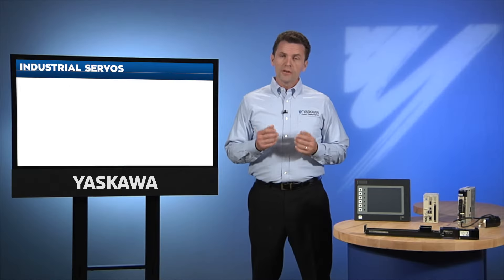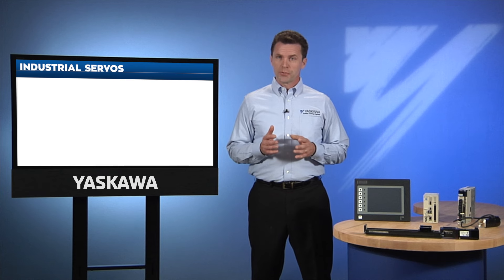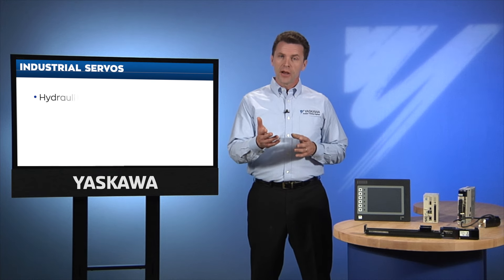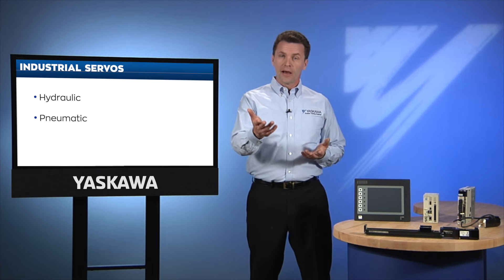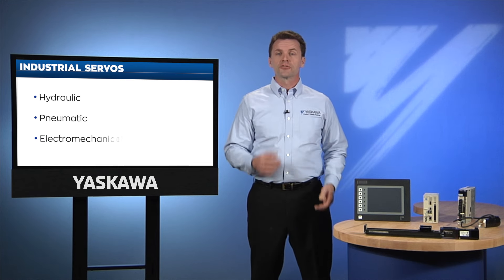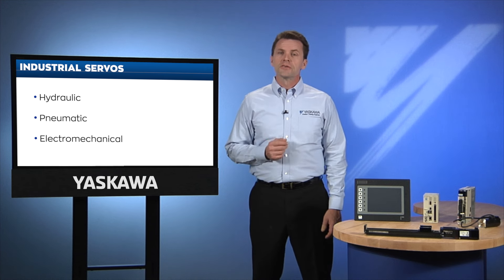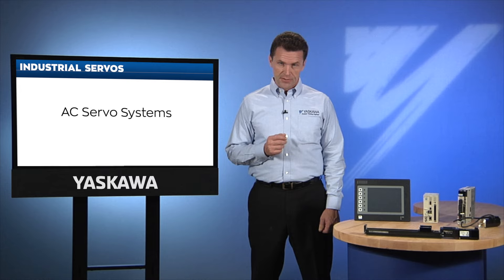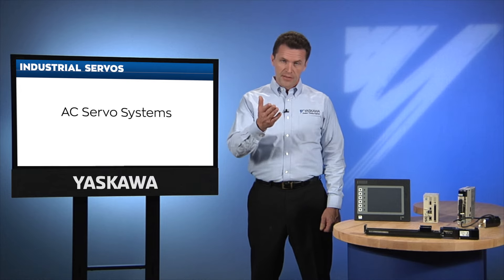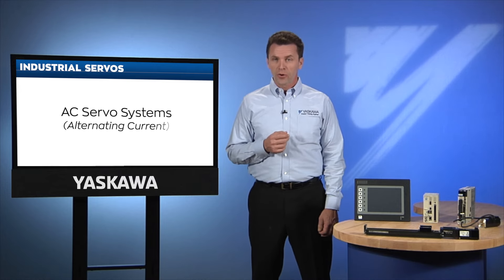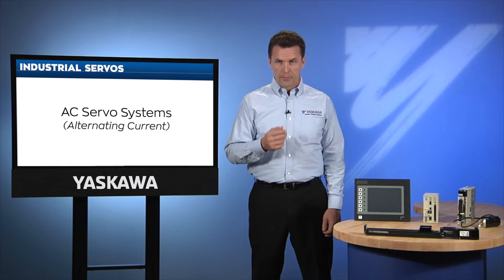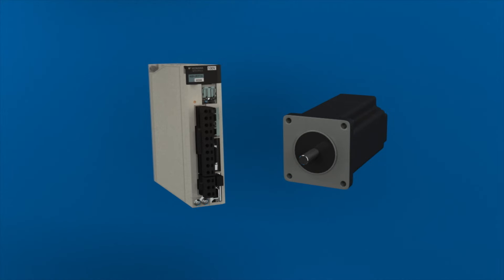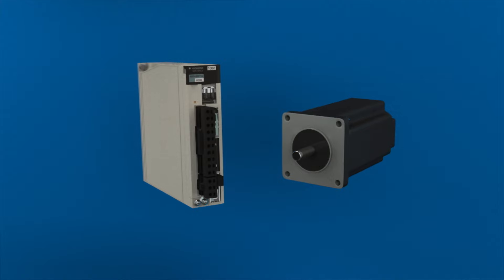The world of industrial servos is a very diverse one. Some servos are hydraulic, some are pneumatic, and others are electromechanical. In recent years, industry has moved more and more toward the use of AC servo systems. AC refers to the alternating current waveform in the motor during operation. The AC servo system involves two basic components: the servo amplifier and the servo motor.